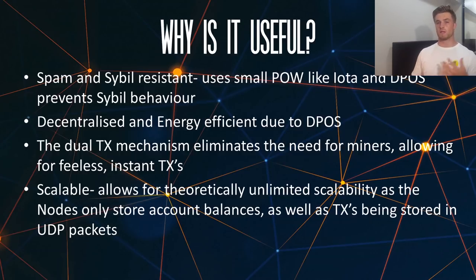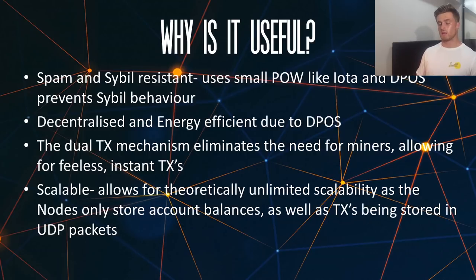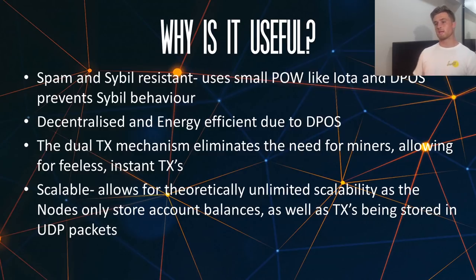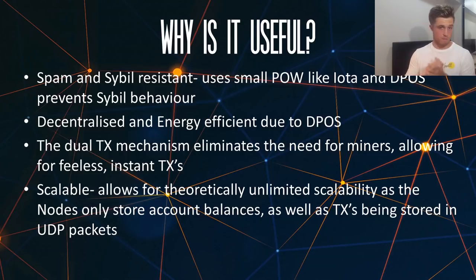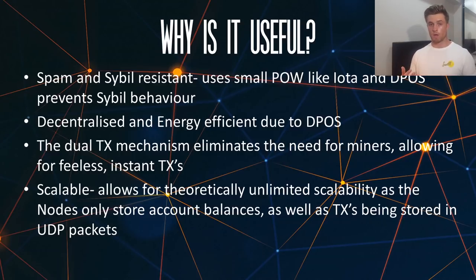DPoS also allows for far more decentralization than proof-of-work, as the delegates are voted in, and it is also much more energy efficient — which is another big scalability problem that proof-of-work blockchains like Bitcoin face that not many people focus on, yet it's such a huge issue. The dual transaction mechanism also eliminates the need for miners and allows for fee-less instant transactions, which is why people are looking into alternatives like Litecoin and Ryblox given Bitcoin's high fees and slow transaction times.